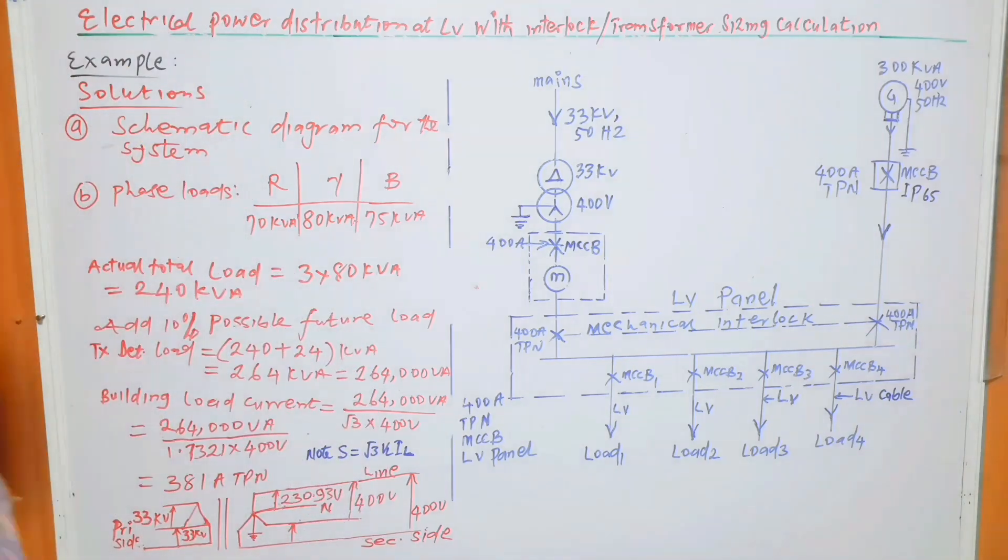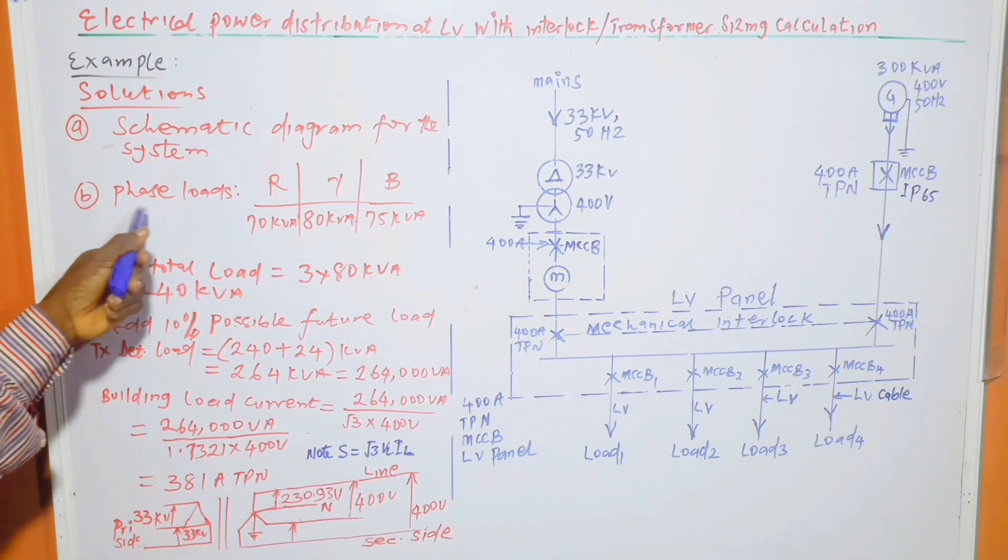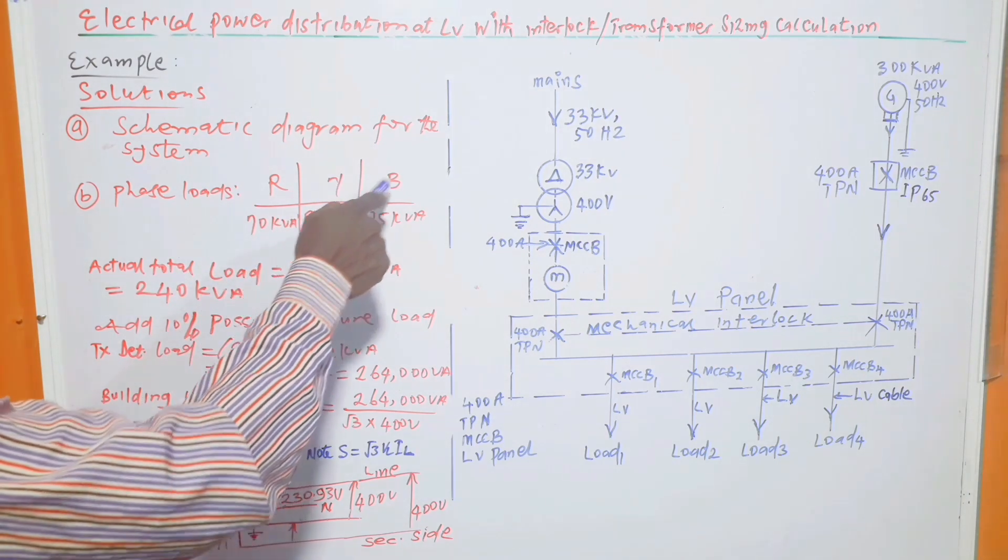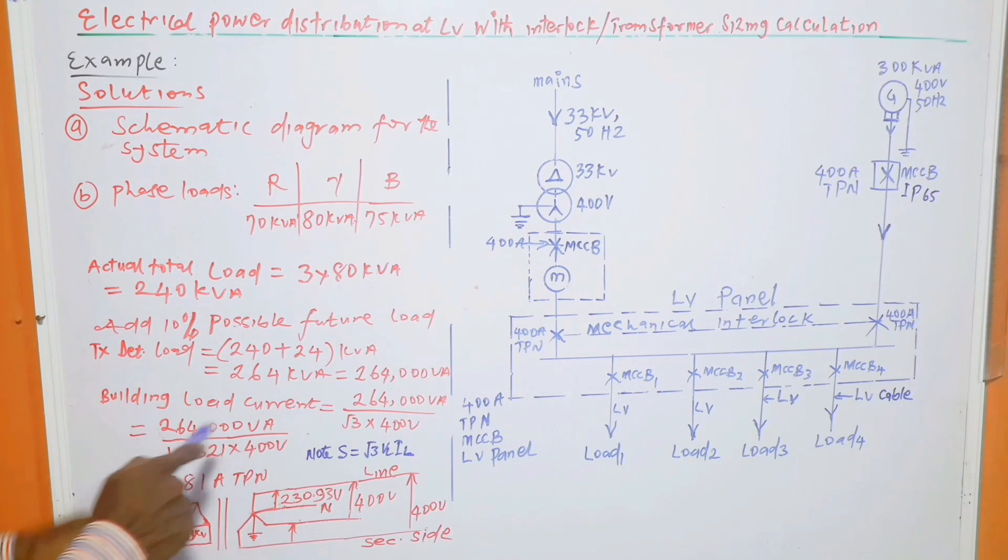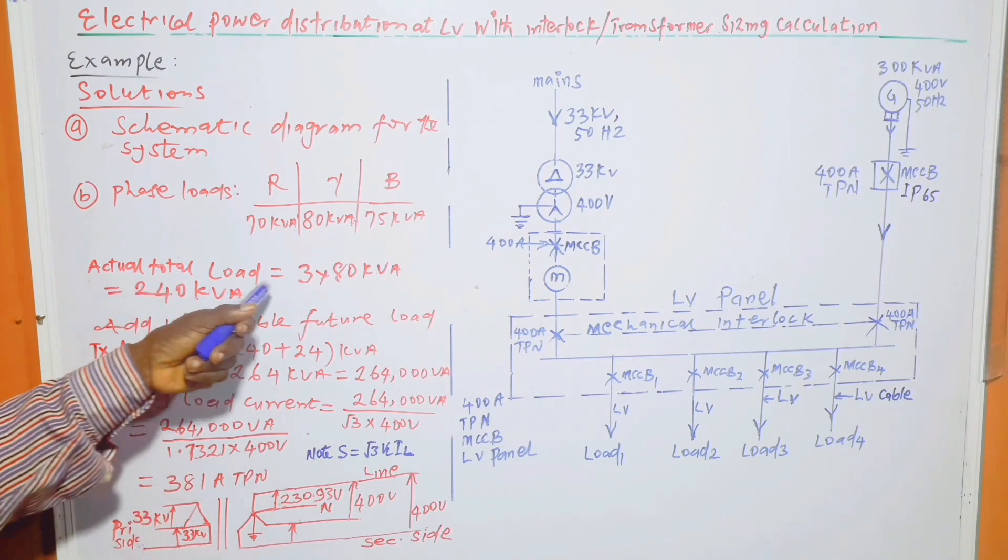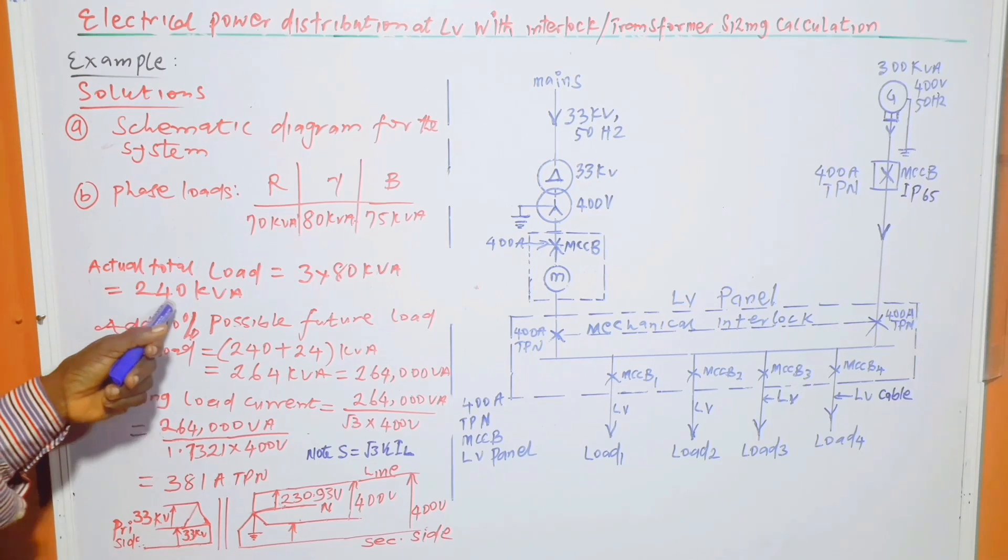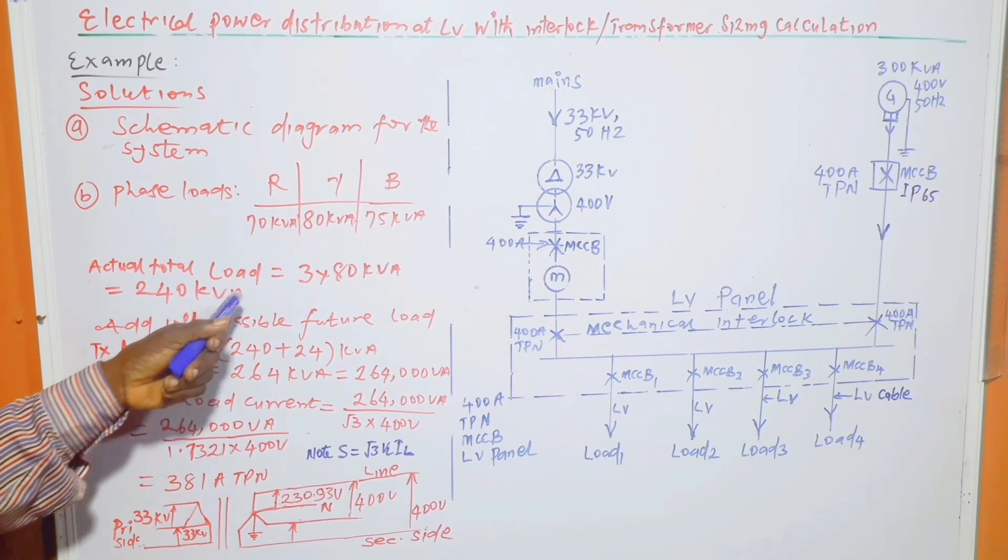Now, B part, phase loads: red phase 70 kVA, yellow phase 80 kVA, blue phase 75 kVA. Actual load is equal to 3 times 80 kVA, which is equal to 240 kVA.